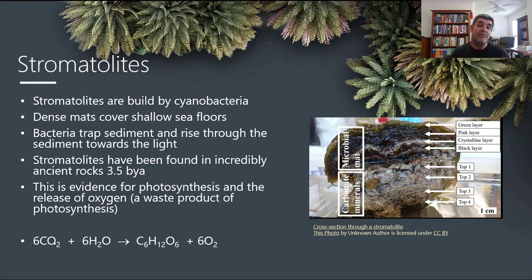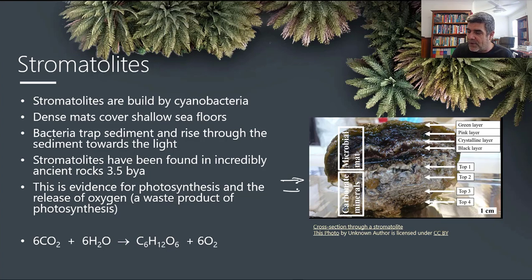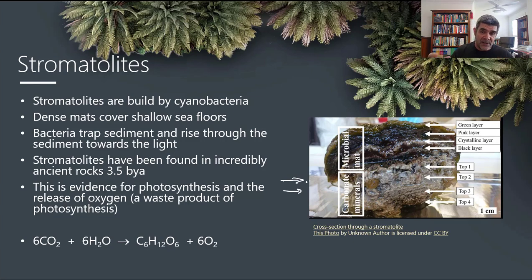It's the cyanobacteria that actually build the stromatolites — they're doing it now, and they were doing it before. Stromatolites are dense mats that cover shallow sea floors, and the bacteria have little extensions or tendrils in their cells that can trap sediment and hold it in place, building little columns. In the cross-section diagram here, you can see the active layers with the pigment associated with photosynthesis, and a crystalline layer of incorporated sediments — layer upon layer building these fantastic stromatolite structures.